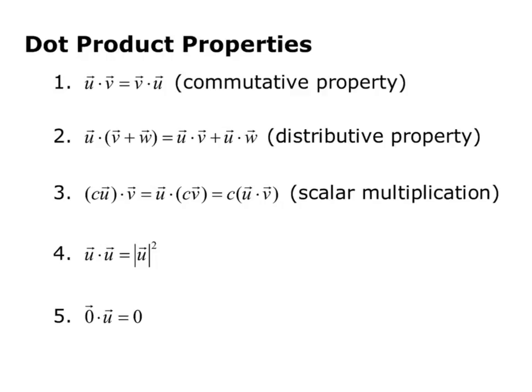u dotted with parentheses v plus w equals u dot v plus u dot w, so it has a distributive property. You can distribute over addition.